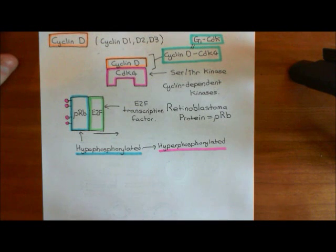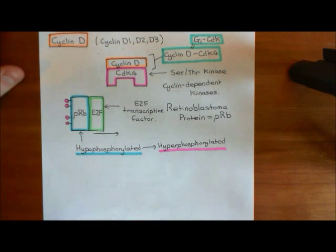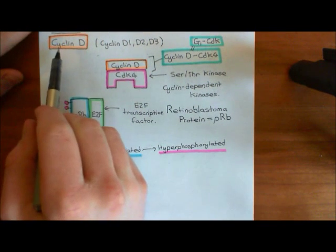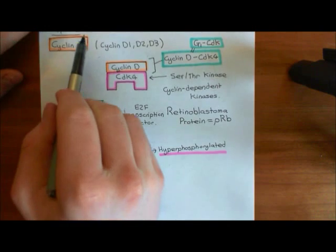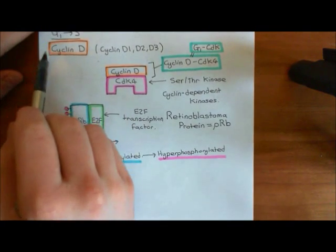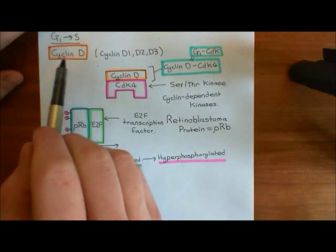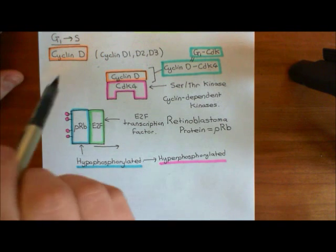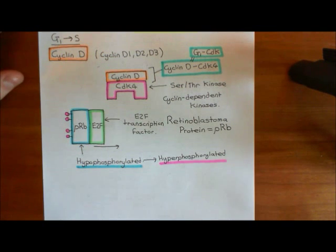Welcome back to this next video in which we are discussing the cell cycle. We're currently looking at the transition between G1 phase and S phase of the cell cycle. Throughout G1 phase, you are building up your levels of cyclin D, and the production of cyclin D is activated by the presence of the growth factor that is activating these growth factor receptor downstream pathways.